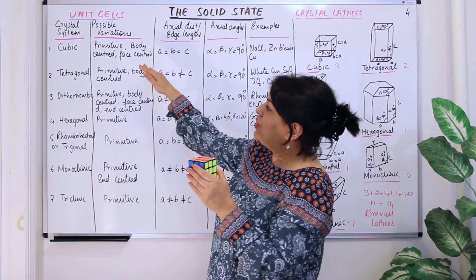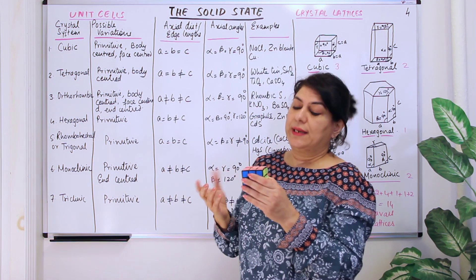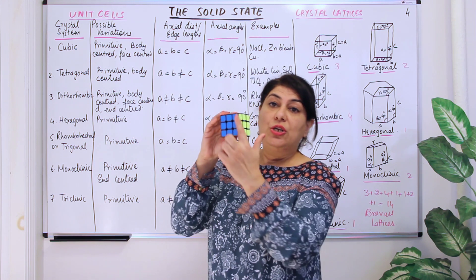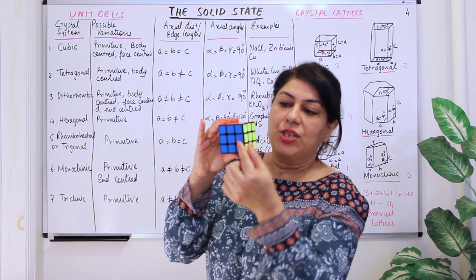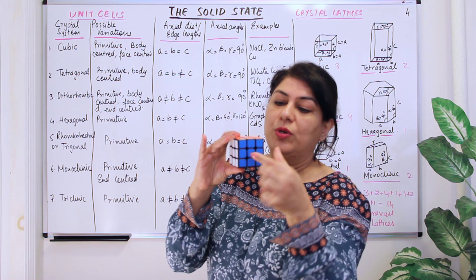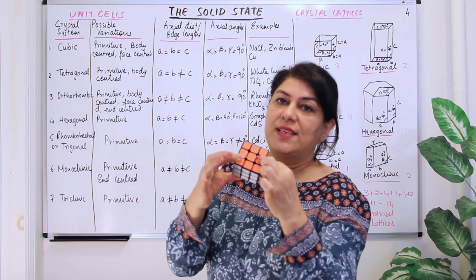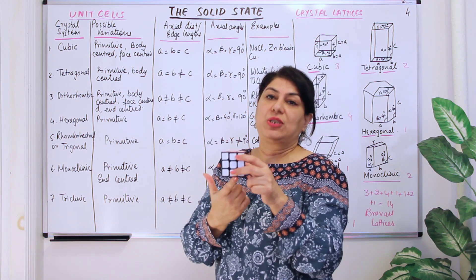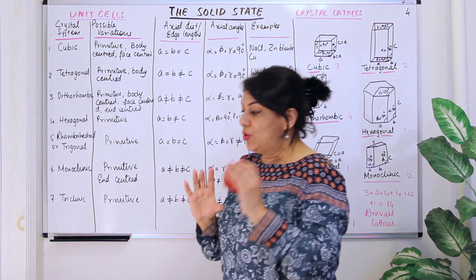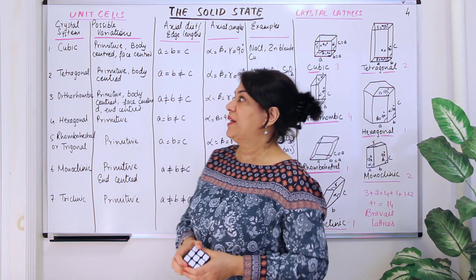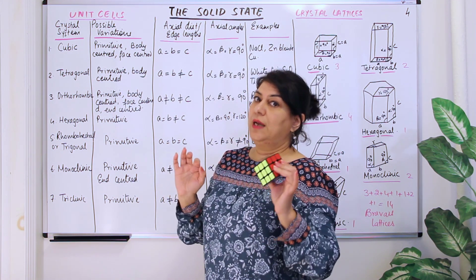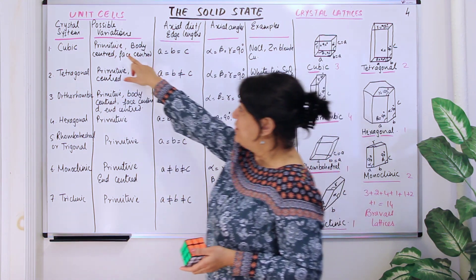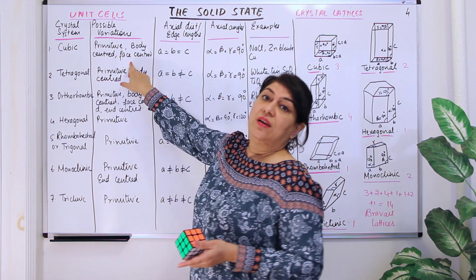There is another variation which is edge-centered — in the center of each edge you also have an atom. And end-centered refers to the top and bottom faces. However, in nature, cubic lattices are found to show only three variations: primitive, body-centered, and face-centered.